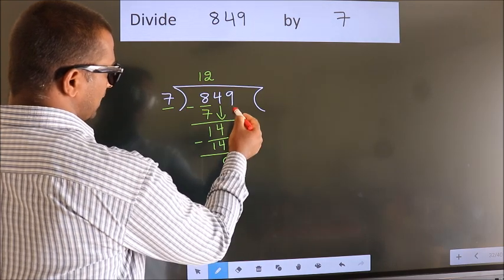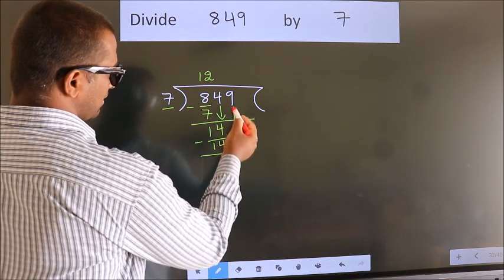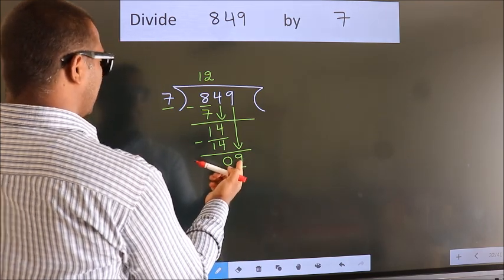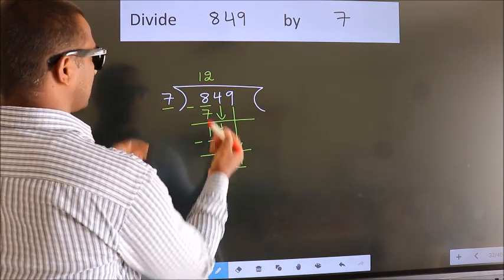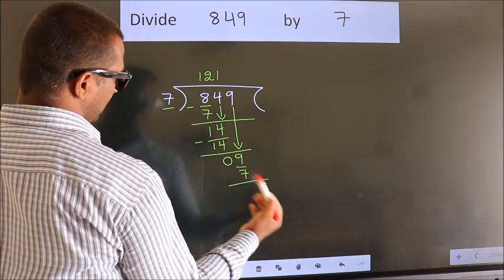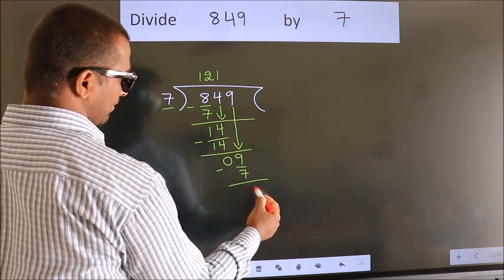After this, bring down the beside number. So 9 down. So 9. A number close to 9 in 7 table is 7 times 1, 7. Now we subtract. We get 2.